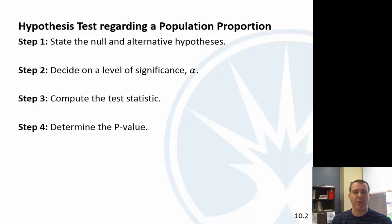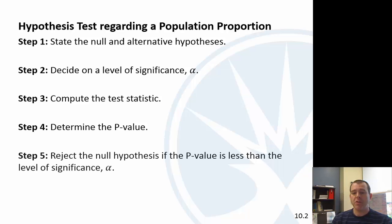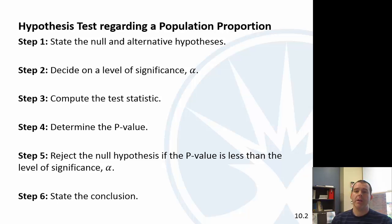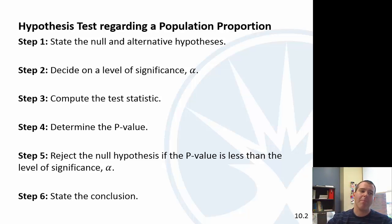Then we'll compute the test statistic and determine the p-value using StatCrunch. If the probability of what we observed is less than our level of significance, we reject the null hypothesis and say the alternative hypothesis is true, then state our conclusion. These six steps are going to be the same for every hypothesis test.